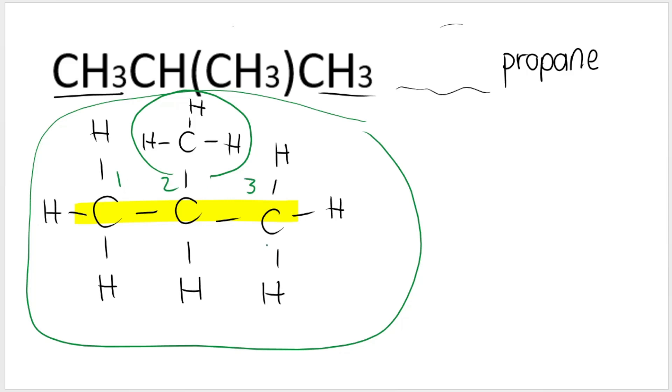Now we can number this carbon chain from left to right or right to left. One, two, three, or one, two, three. Either way, the methyl group is on carbon number two. Remember, it's a methyl group because there's one carbon in the branch, in the substituents. So it is going to be 2-methylpropane. Remember, this is actually one word.